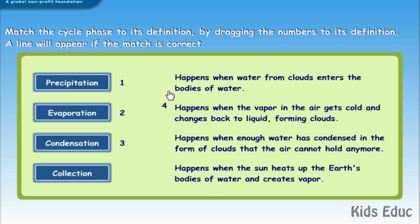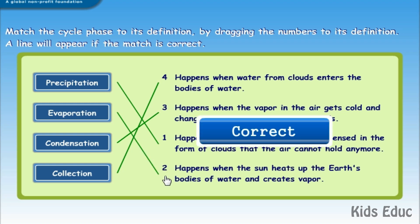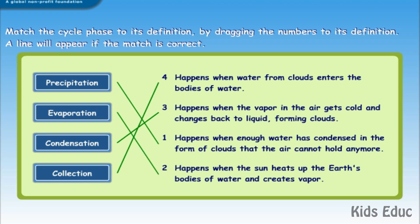Correct! Happens when water from clouds enters the bodies of water. Condensation! Correct! Happens when the vapor in the air gets cold and changes back to liquid, forming clouds. Precipitation! Happens when enough water has condensed in the form of clouds that air cannot hold anymore. Evaporation! Correct! Happens when the sun heats up the earth's bodies of water and creates vapor.